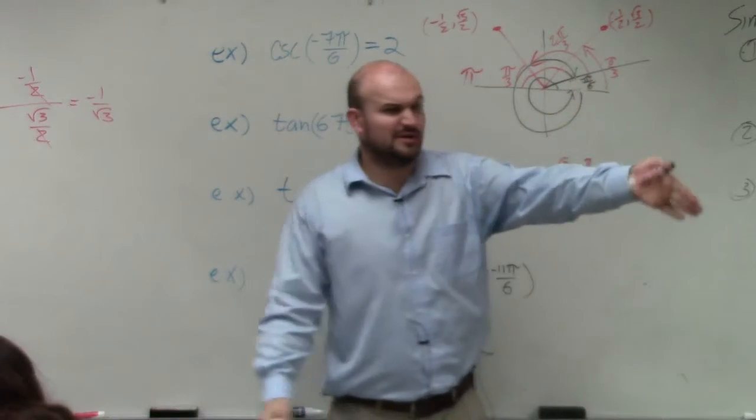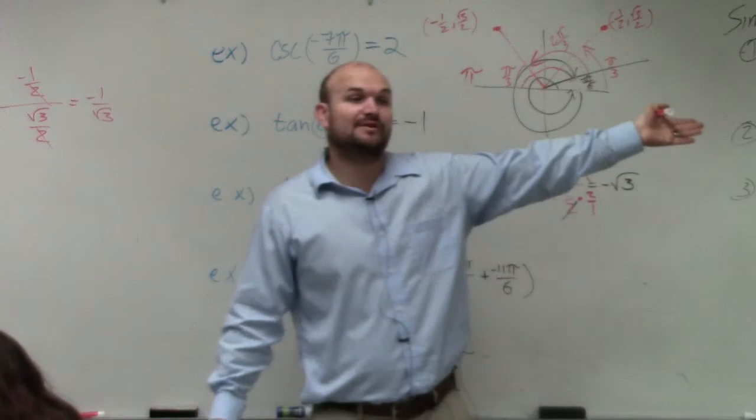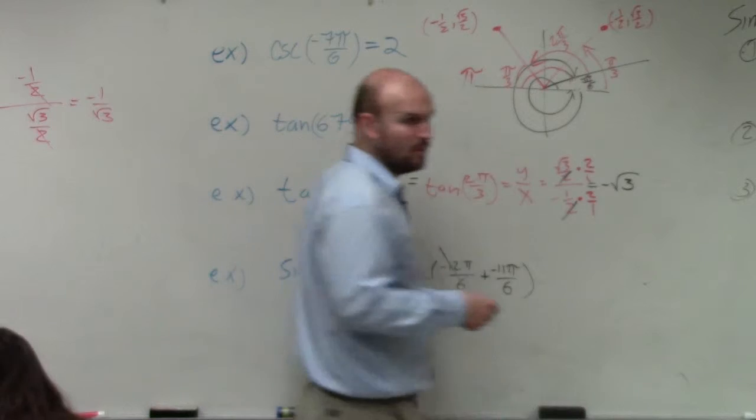So if I have pi over 6, I look at my unit circle and I say, OK, well, what is the point then at pi over 6? That's going to be square root of 3 over 2 comma 1 half. What is the sign of that point? 1 half.